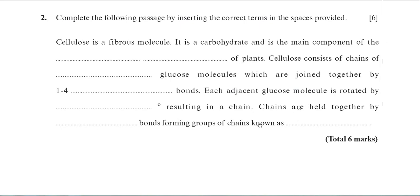And lastly, forming groups of chains known as microfibrils. Remember, lots and lots of chains of beta glucose hydrogen bond together to form this larger structure known as a microfibril. The answer to that is not macrofibril or cellulose fibre. A cellulose fibre or macrofibril is formed when many microfibrils join together. So the answer for this one is microfibrils.